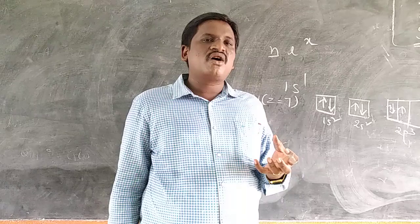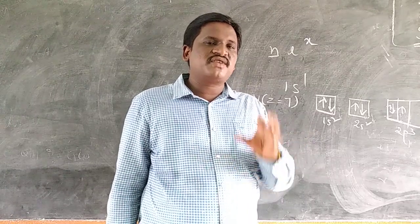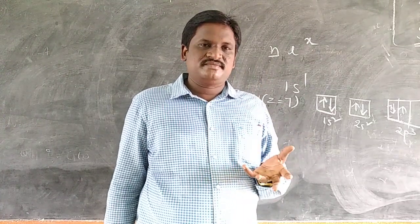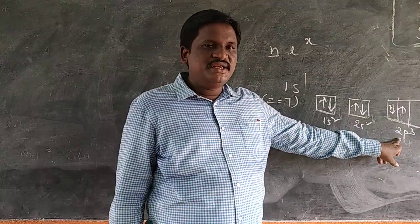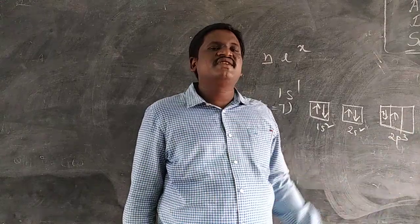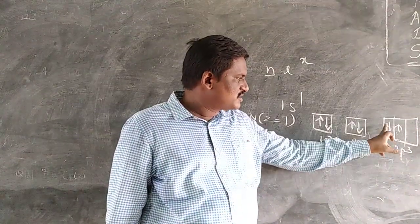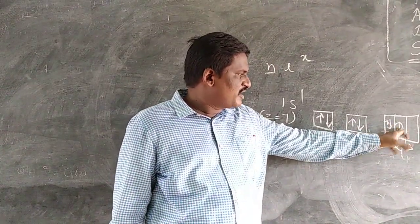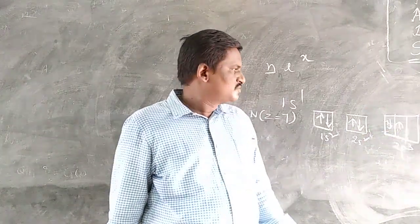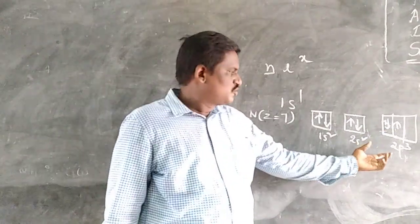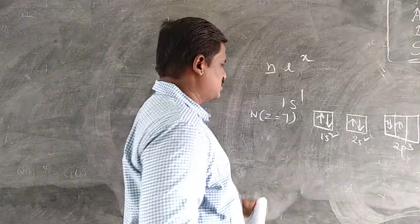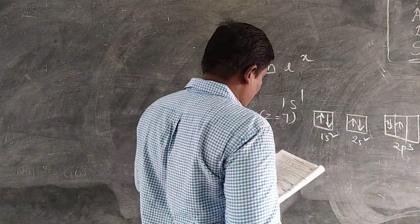What is the meaning of Hund's rule? When electrons are filled in atomic orbitals, first single occupy, after we pair them. So for 2P3, the correct filling is 2Px1, 2Py1, 2Pz1. Hund's rule is not supported when the orbitals are not singly occupied first.